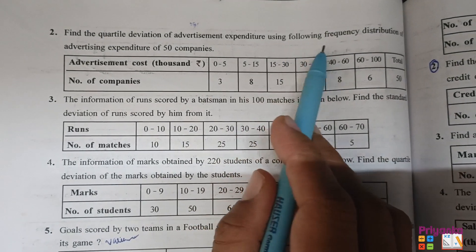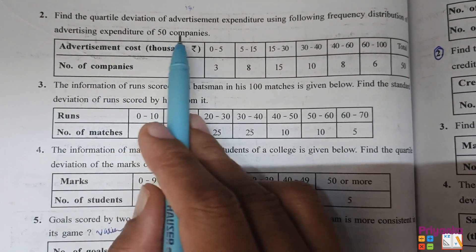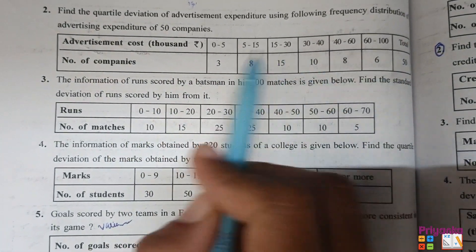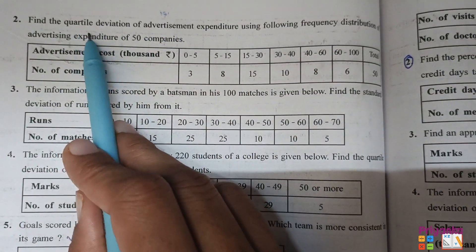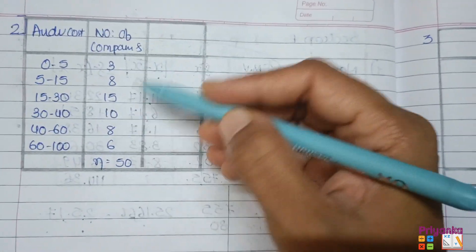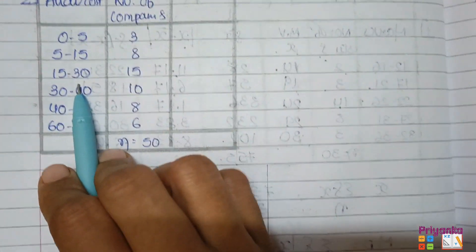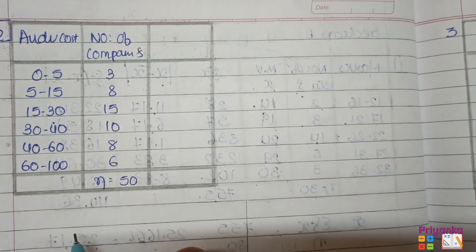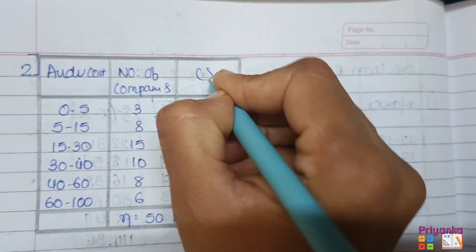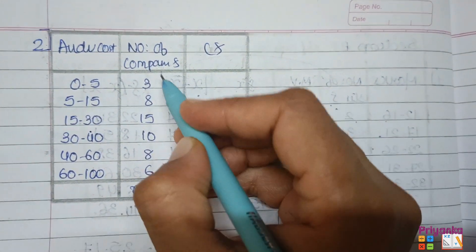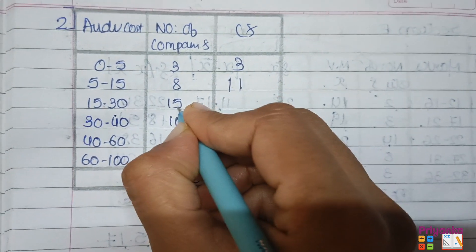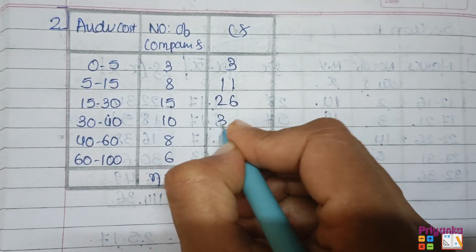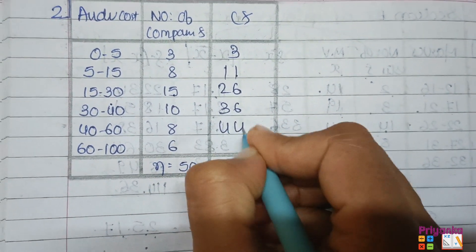Question 2: Find the quartile deviation of advertisement expenditure using the following frequency distribution of advertising expenditure of 50 companies. The observation and number of companies (frequency) are given. Since it is a continuous frequency distribution, first build the cumulative frequency: 11, 11+15=26, 26+10=36, 36+8=44, 44+6=50. Total n is 50.